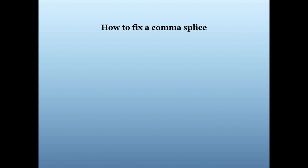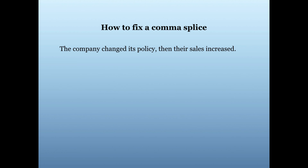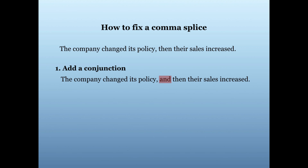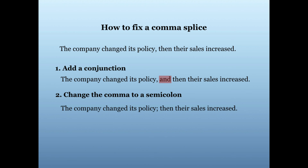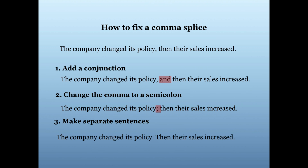Now let's talk about how to fix a comma splice — it's very similar to fixing a run-on sentence. One thing you can do is add a conjunction such as 'and,' 'but,' or 'so.' For example: 'The company changed its policy, and then their sales increased.' Another option is to change the comma to a semicolon. A third way is simply to separate the sentences by putting a period.